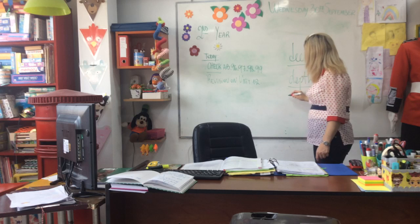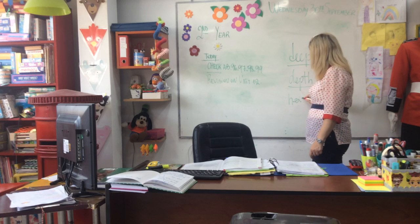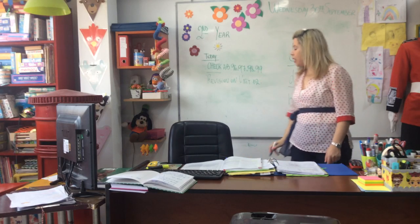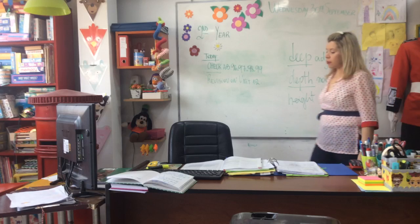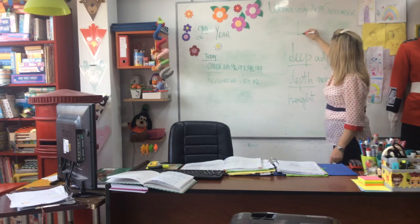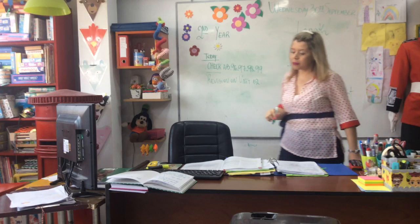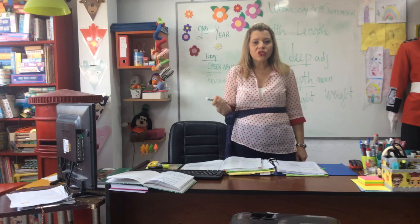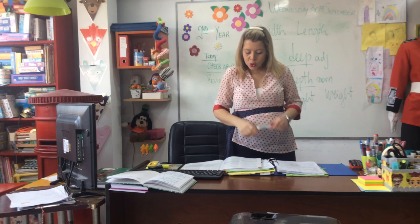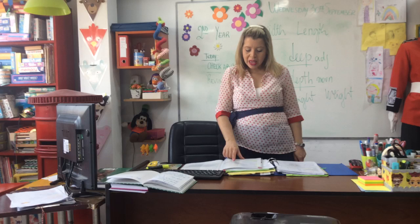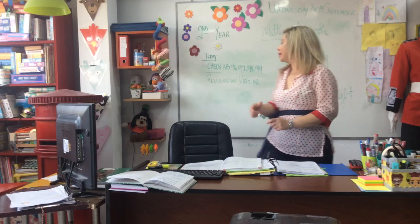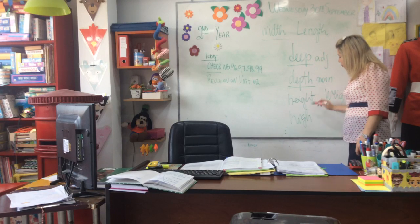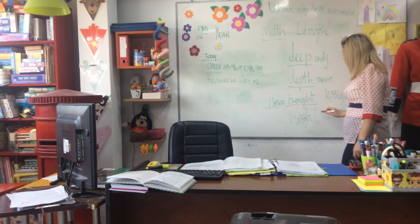Then number 2 — height, altura. Number 3 — weight, peso. Number 4 — wide. OK, altura, peso. Is it clear? So: 1a — long; b — length; 2a — height; b — high. Atención, high is the adjective and height is the abstract noun.